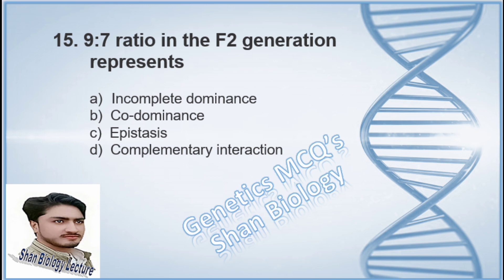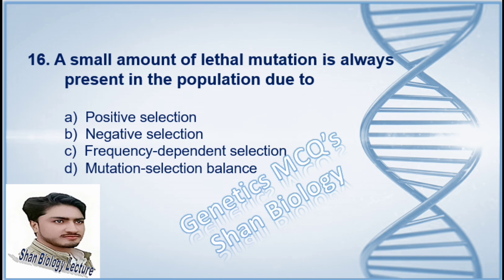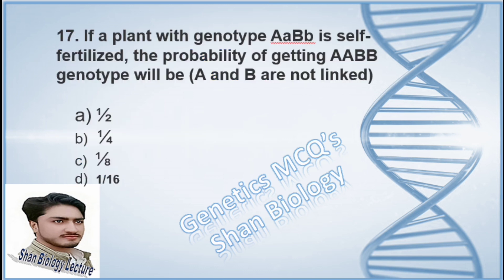Question 15: A 9:7 ratio in the F2 generation represents — option A incomplete dominance, option B codominance, option C epistasis, option D complementary interaction. The correct option is C, epistasis. Question 16: A small amount of lethal mutation is always present in a population due to — option A positive selection, option B negative selection, option C frequency-dependent selection, option D mutation-selection balance. The correct option is D, mutation-selection balance.